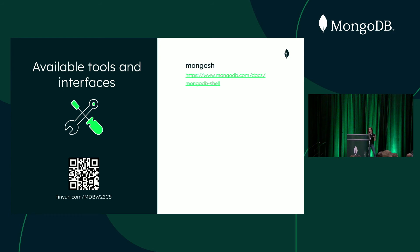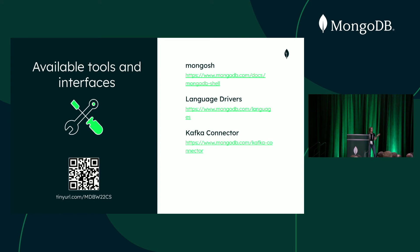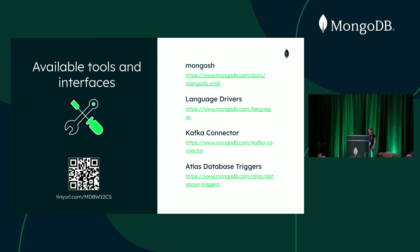I wanted to mention the available tools and interfaces for change streams. Mongosh shell is the easiest way to give it a try with no code needed. You can use language drivers, which have all the needed helpers. There is a Kafka connector developed by MongoDB that helps you plug Kafka on top of change streams. And Atlas database triggers are also based on change streams — it's a hosted service where you can program the reaction to change stream events right in the Atlas UI, without having to do it in your application.